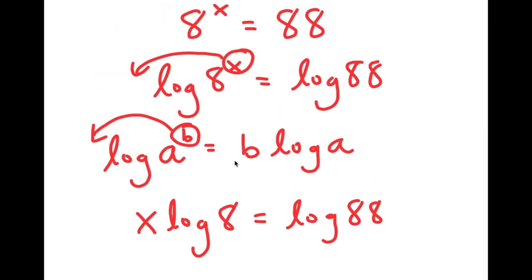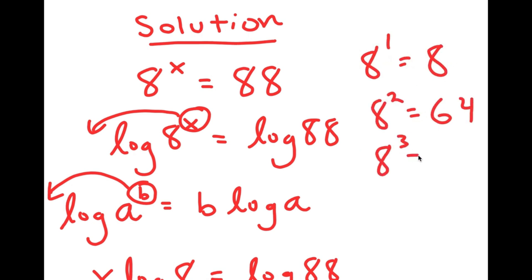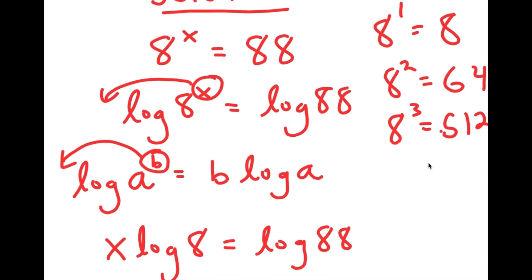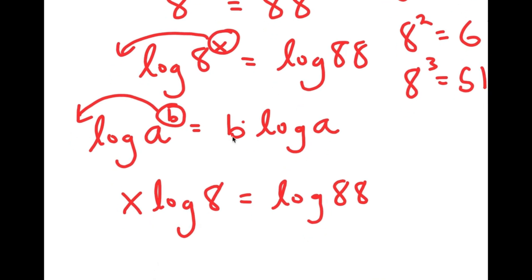The reason this property is so useful is because before, x was an exponent. For our equation, if x is 1, I get 8; if x is 2, I get 64; and if x is 3, I get 64 times 8, which is 512. We want to find what value of x results in 88, which is somewhere between 2 and 3, but we don't know exactly where because it's going to be a decimal. We can't really find the exact value when x is in exponent form, so this is why we make it into a real term using this property — now it's much simpler to solve.